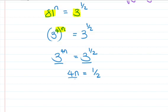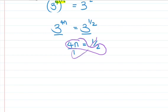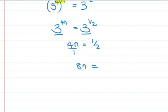To solve for n, we do cross multiplication. We get 2 times 4n is equal to 1, so 8n equals 1, which gives n is equal to 1 over 8.